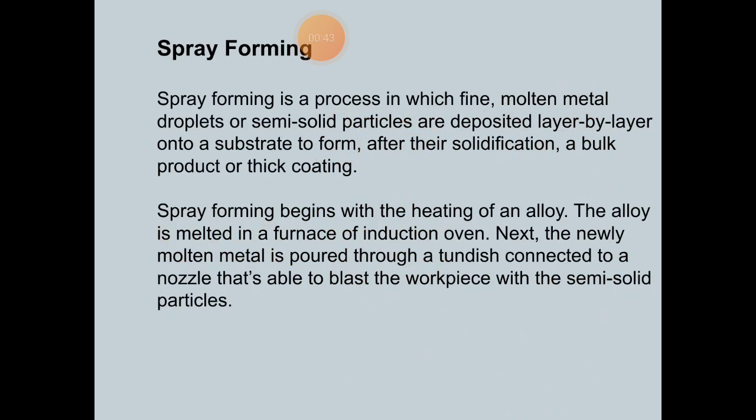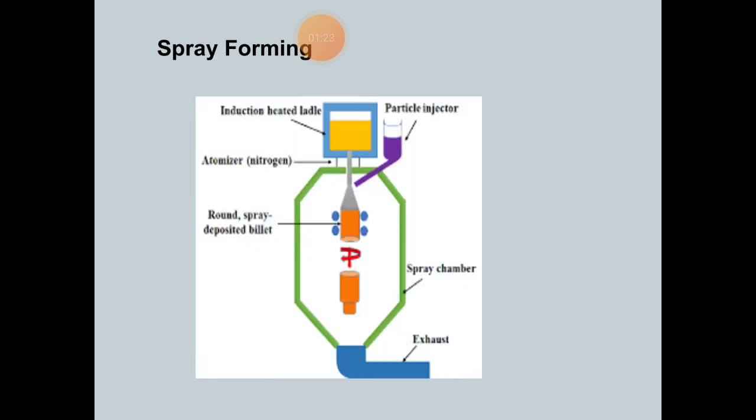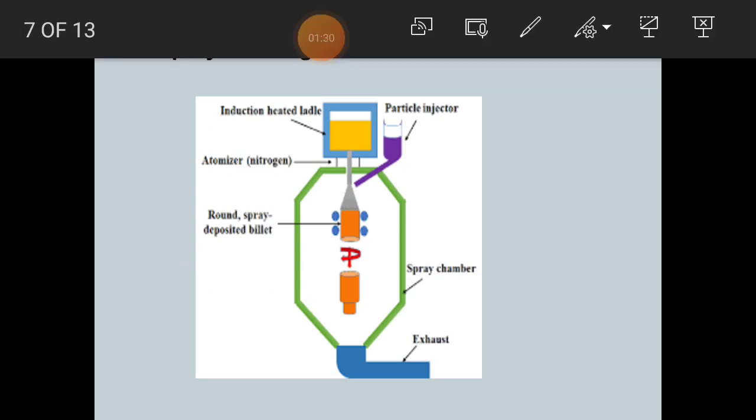See, the first process is spray forming. Spray forming is a process in which fine molten metal droplets or semi-solid particles are deposited layer by layer onto a substrate to form after their solidification, a bulk product or thick coating. Then, spray forming of particulate MMC involves the use of spray techniques that have been used for some time to produce the monolithic alloys.